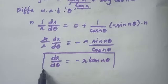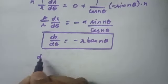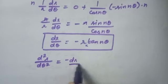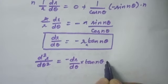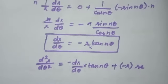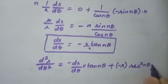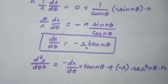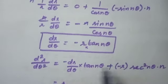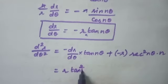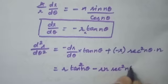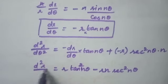Next, find d²r/dθ². Differentiate dr/dθ = −r·tan(nθ) again with respect to θ using the product rule: d²r/dθ² = −(dr/dθ)·tan(nθ) + (−r)·sec²(nθ)·n. Substituting dr/dθ = −r·tan(nθ): d²r/dθ² = r·tan²(nθ) − n·r·sec²(nθ).